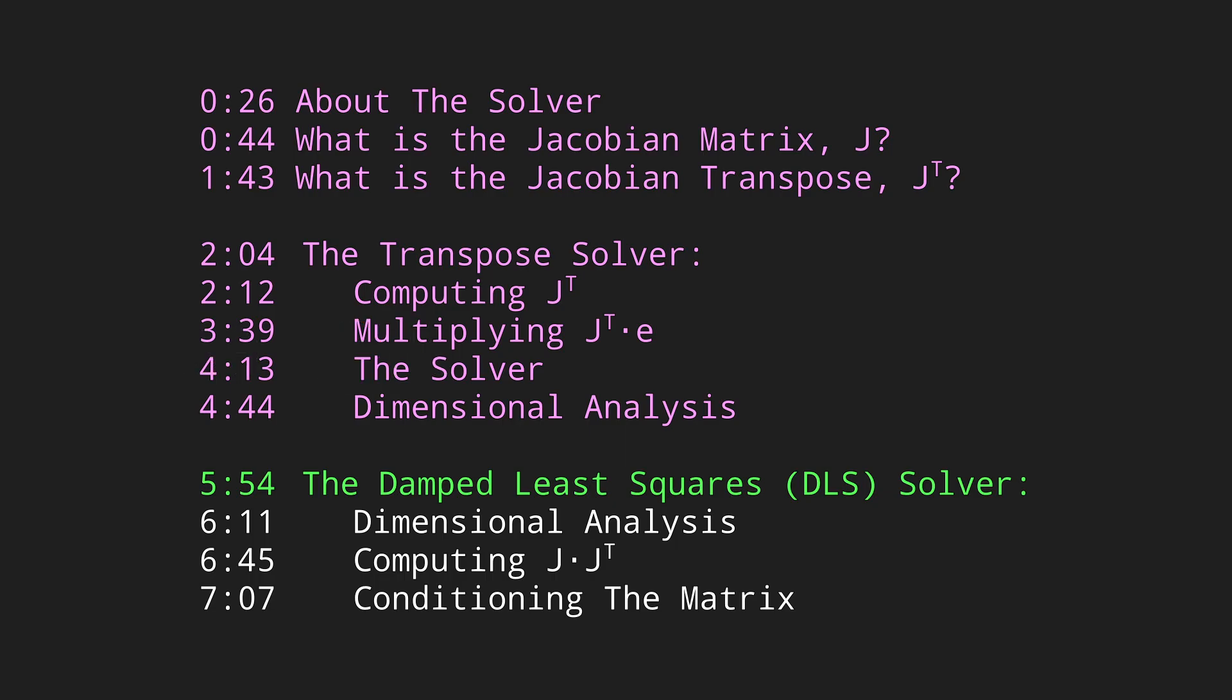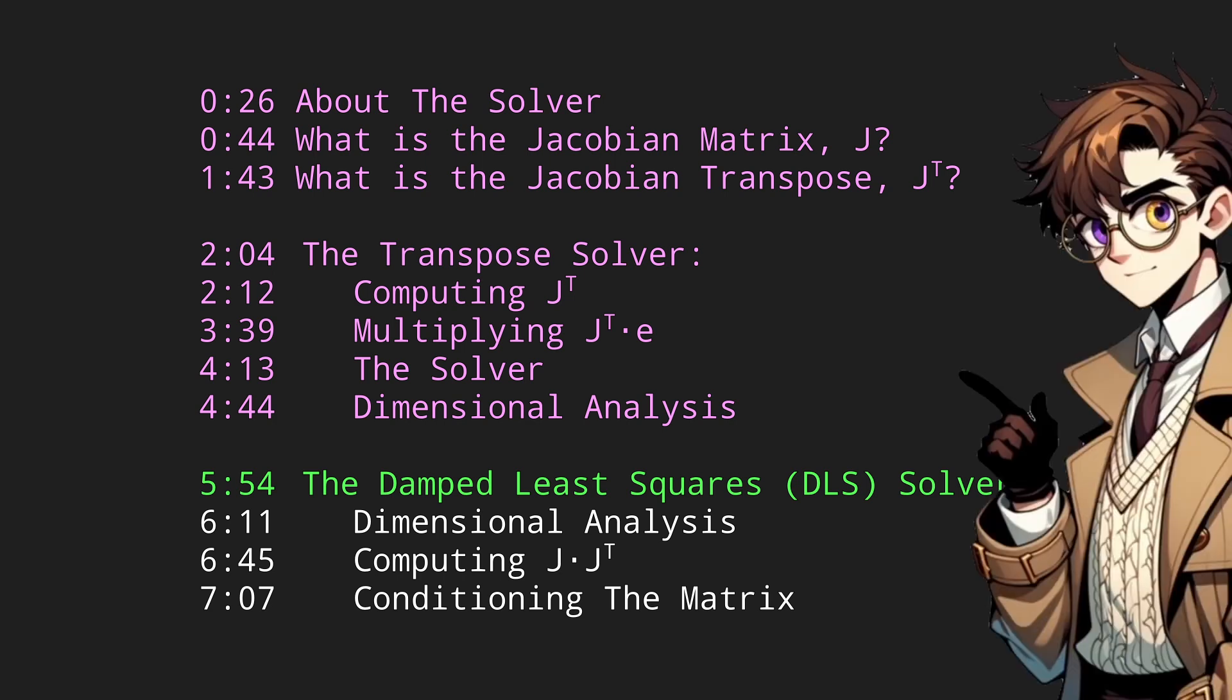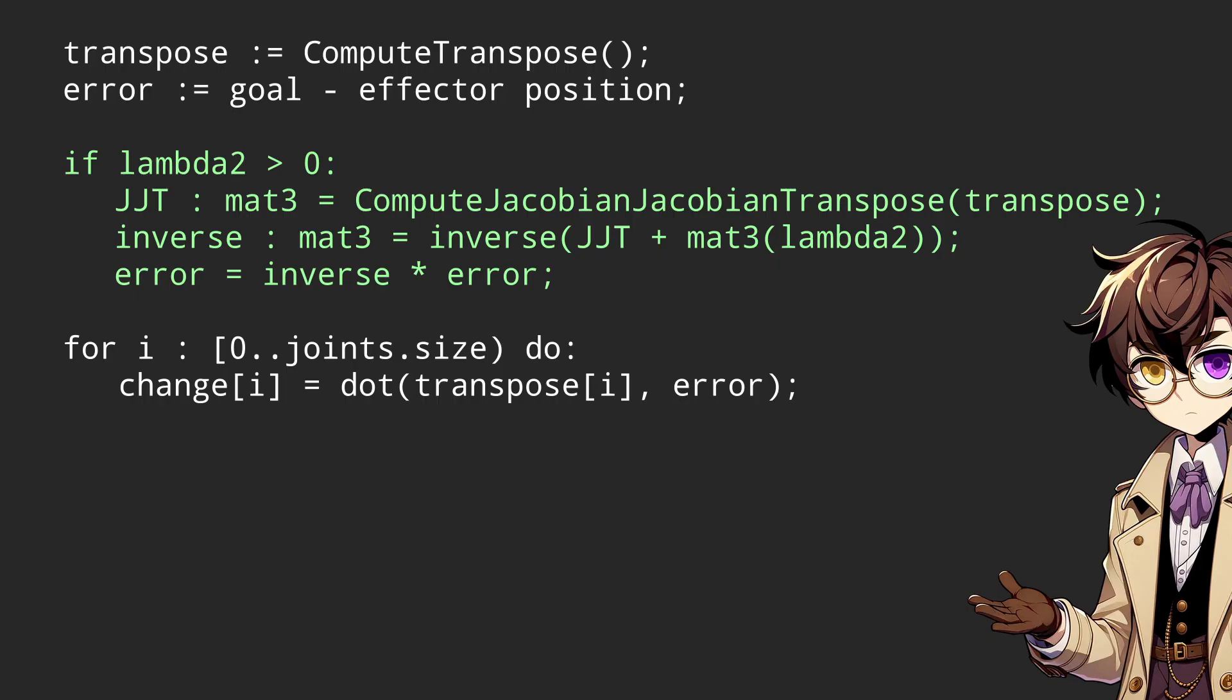Damp least squares time. One of the easier solutions to this is the damp least squares method. It's reasonably performant and fixes our units problem. As before we'll go through it one bit at a time. Our solver now has this new stuff in it. If lambda is over 0 that means we want to use the DLS method, damp least squares.